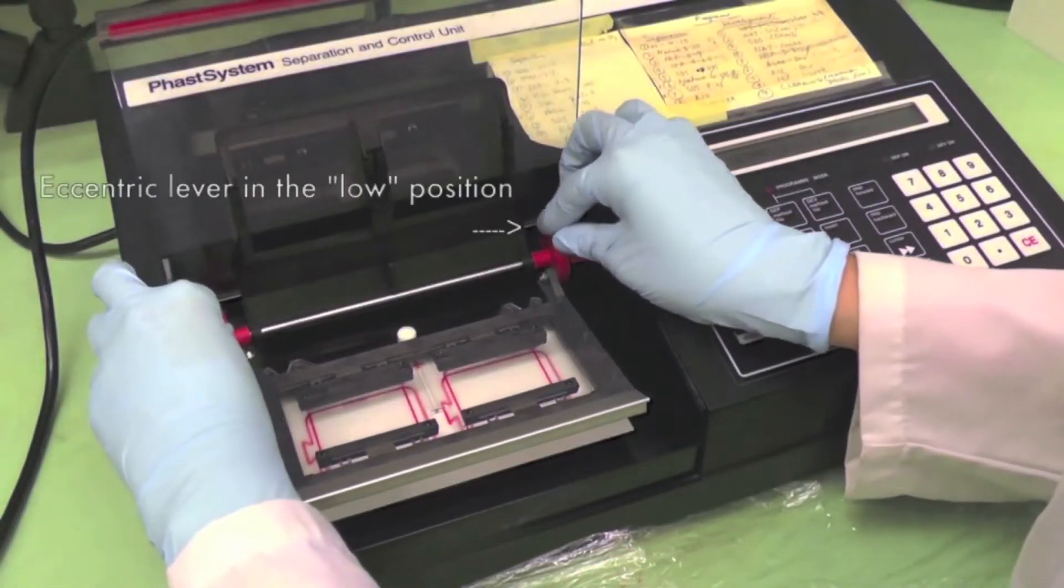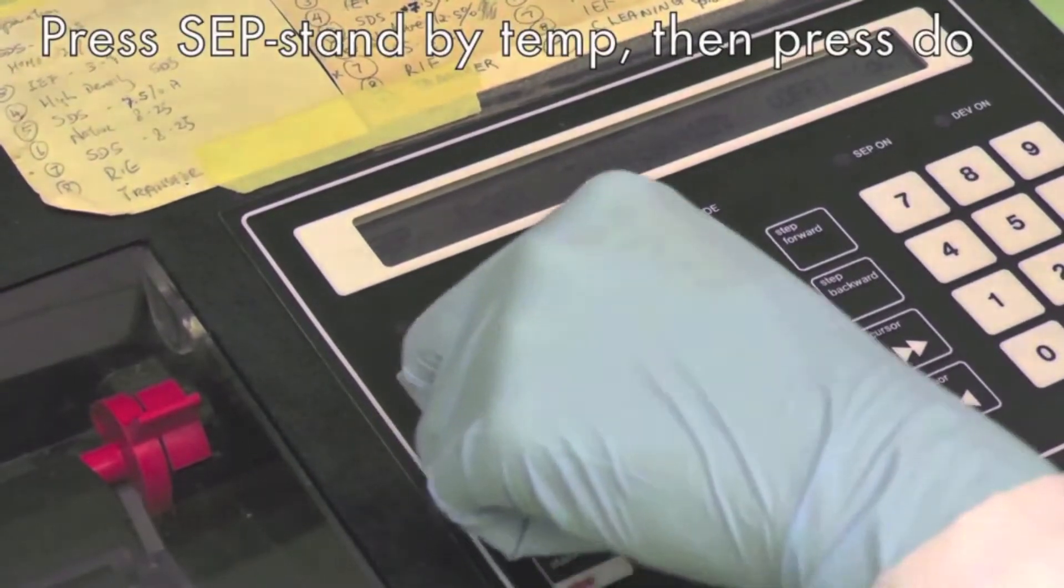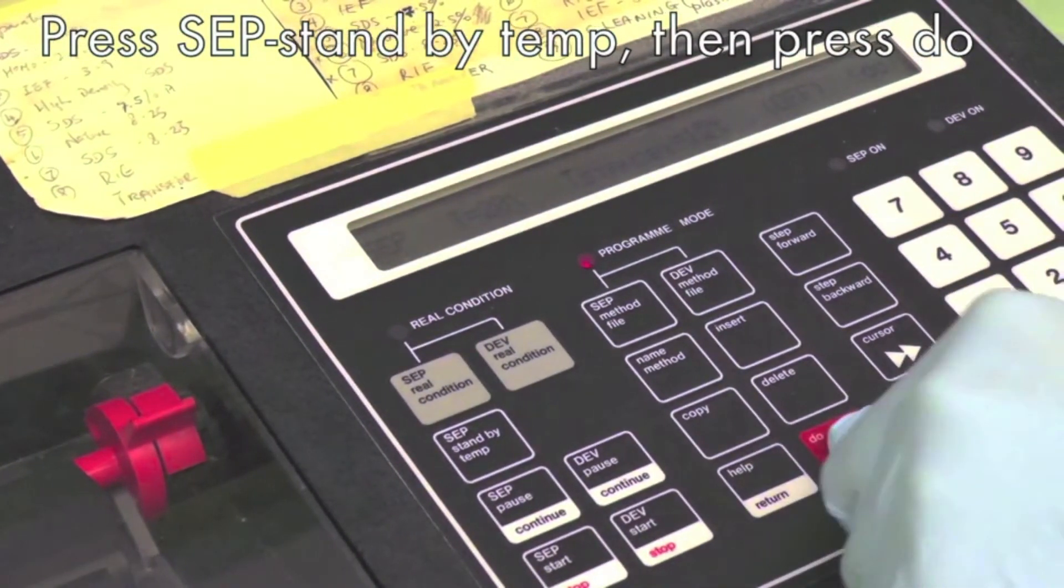For IEF PAGE, the eccentric lever should be at the low position such that the electrode can lay flat on the gel surface. Press the standby temp button and press do to cool the gel bed.